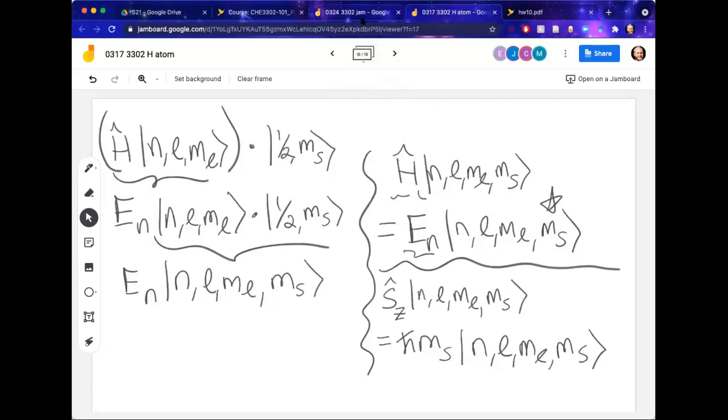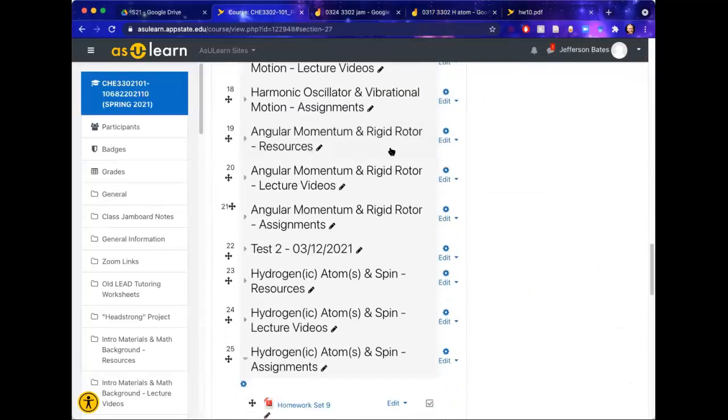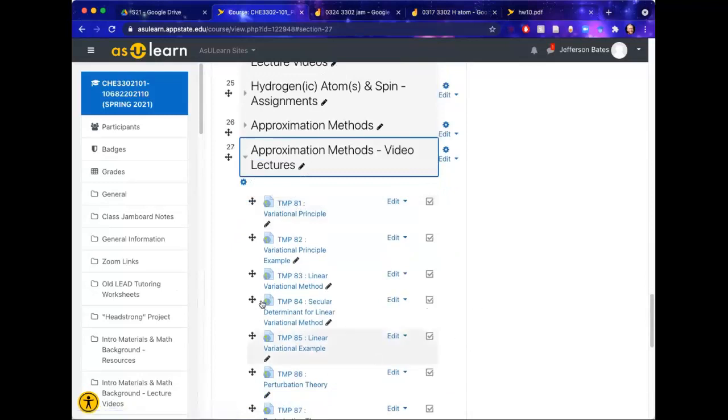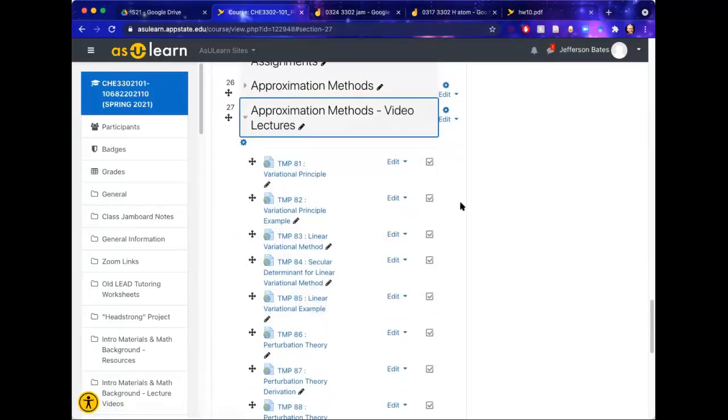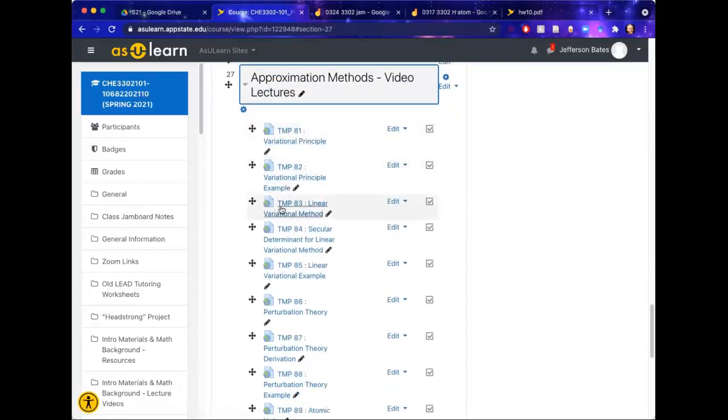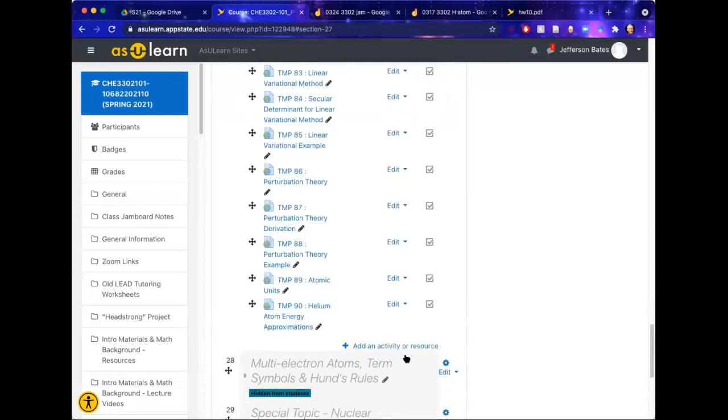Alright, great. So the next unit we're going to get into is involving what happens when we can't solve something exactly. Just to point out the resources that are available on the AsYouLearn page, I've unhidden the video lectures now. If you want to try to watch any of those, they can be very informational here. I think Trent does a good job breaking these concepts down. In particular, the first two will be very important for the variational principle, then there's some examples, and then we've got some stuff on perturbation theory, which we'll talk about next week.